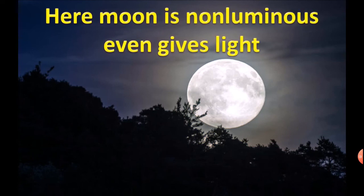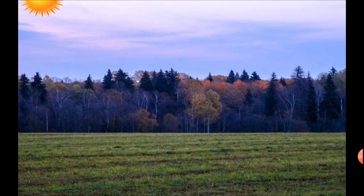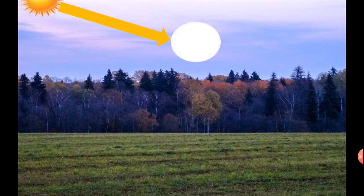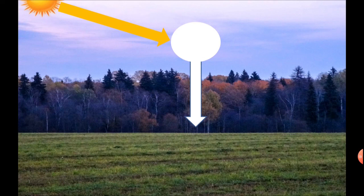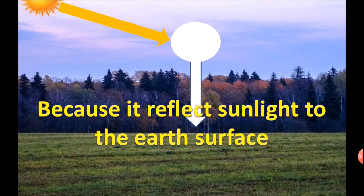Here, moon is non-luminous even though it gives light, because it reflects sunlight and becomes visible. Moon reflects sunlight to the earth's surface and it seems like light is coming from the moon.